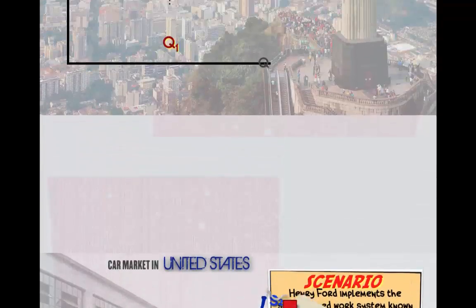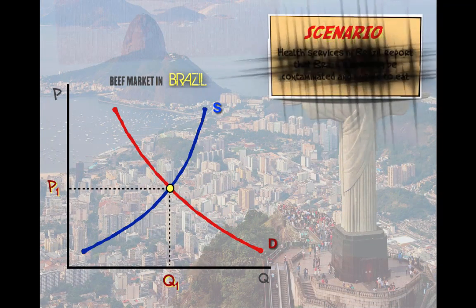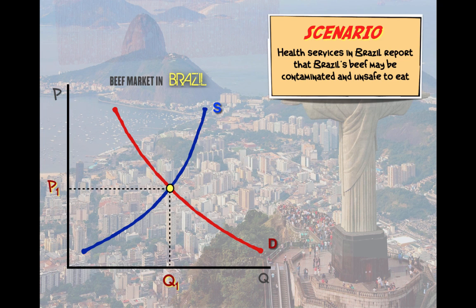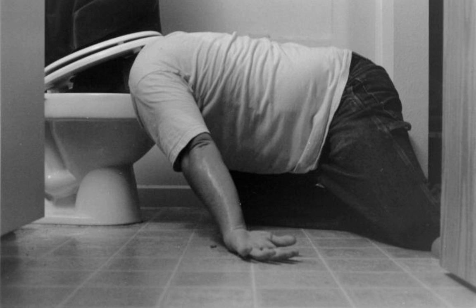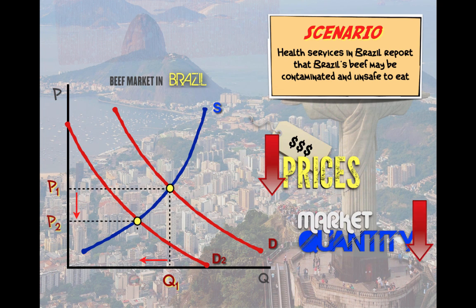Next is a graph for the market for beef in Brazil. Suppose health services in Brazil report that Brazil's beef may be contaminated and unsafe to eat. When consumers get word of this, their tastes and preferences when it comes to food may change. As a result, demand for beef in Brazil is going to decrease, causing the price for beef to decrease and the quantity sold in the market to decrease.